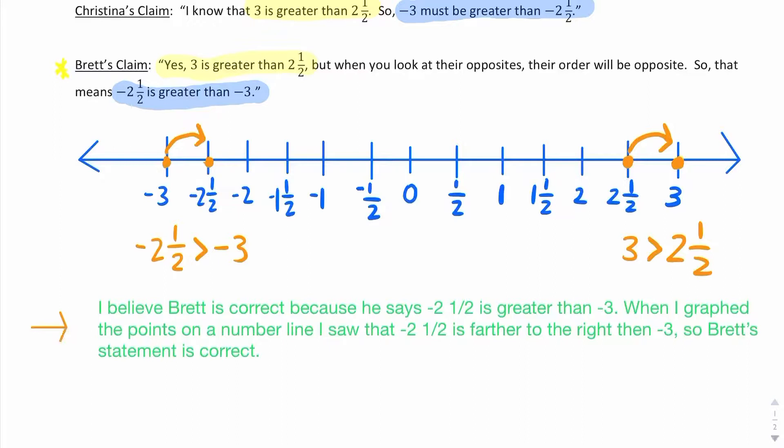I believe Brett is correct because he says negative 2 and 1 half is greater than negative 3. When I graphed the points on a number line, I saw that negative 2 and 1 half is farther to the right than negative 3. So Brett's statement is correct.